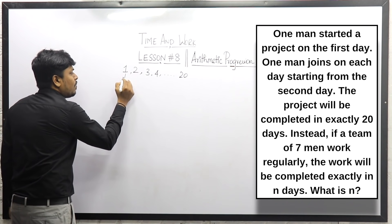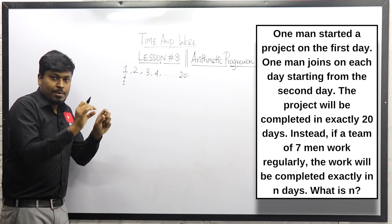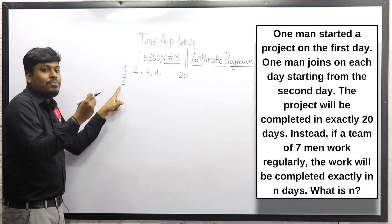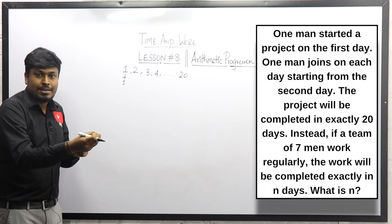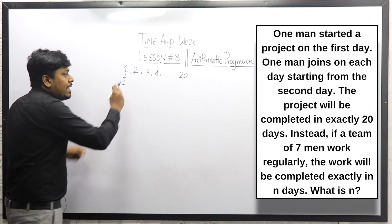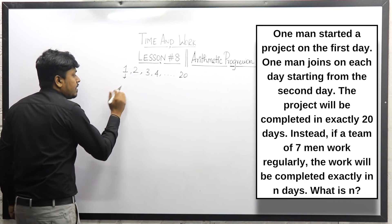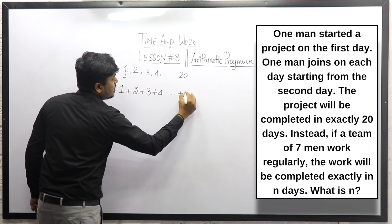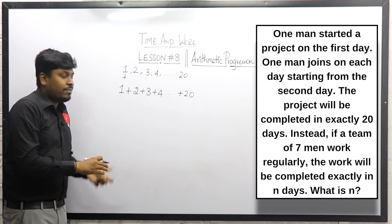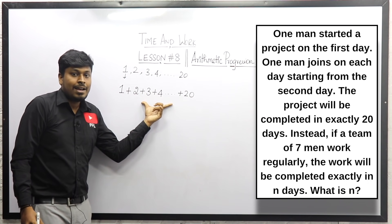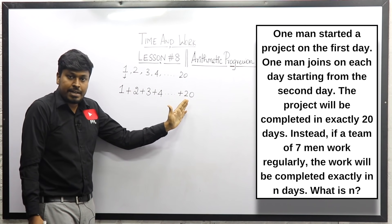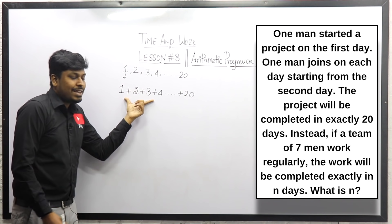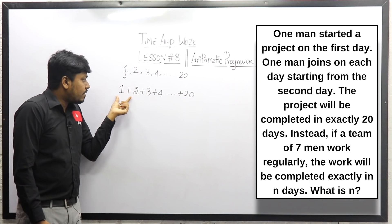Assuming one man does one part of work per day: on day 1, one part is completed; day 2, two parts; day 3, three parts — and so on until day 20. So total work = 1 + 2 + 3 + ... + 20. This is an arithmetic progression, which is exactly why we learned the AP formula.